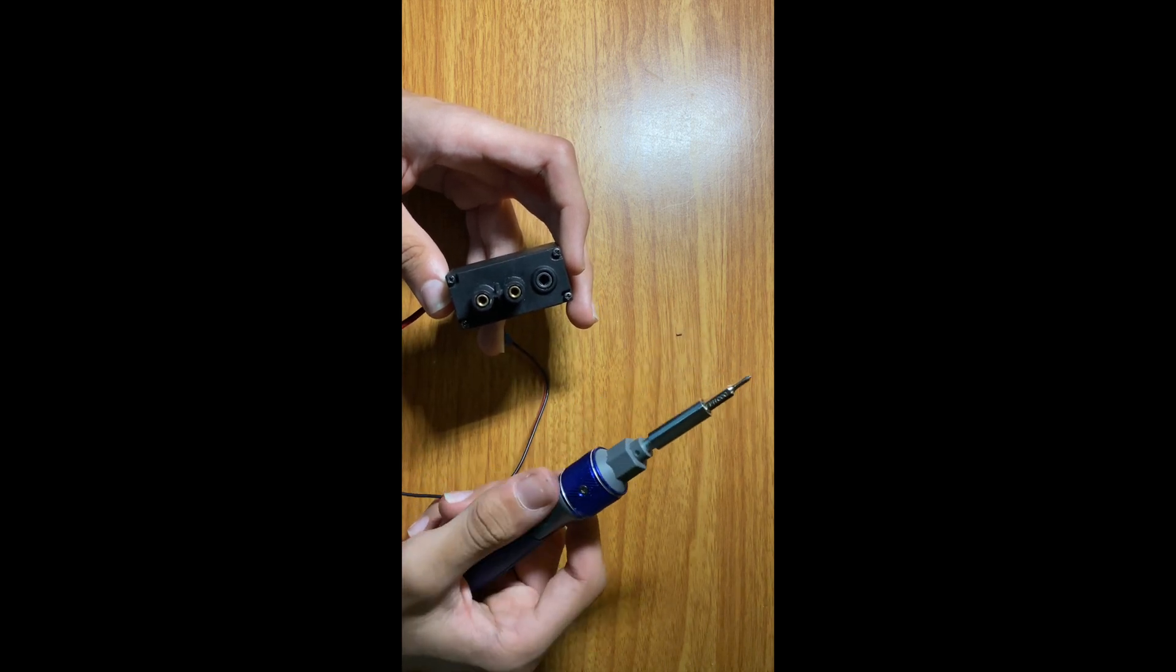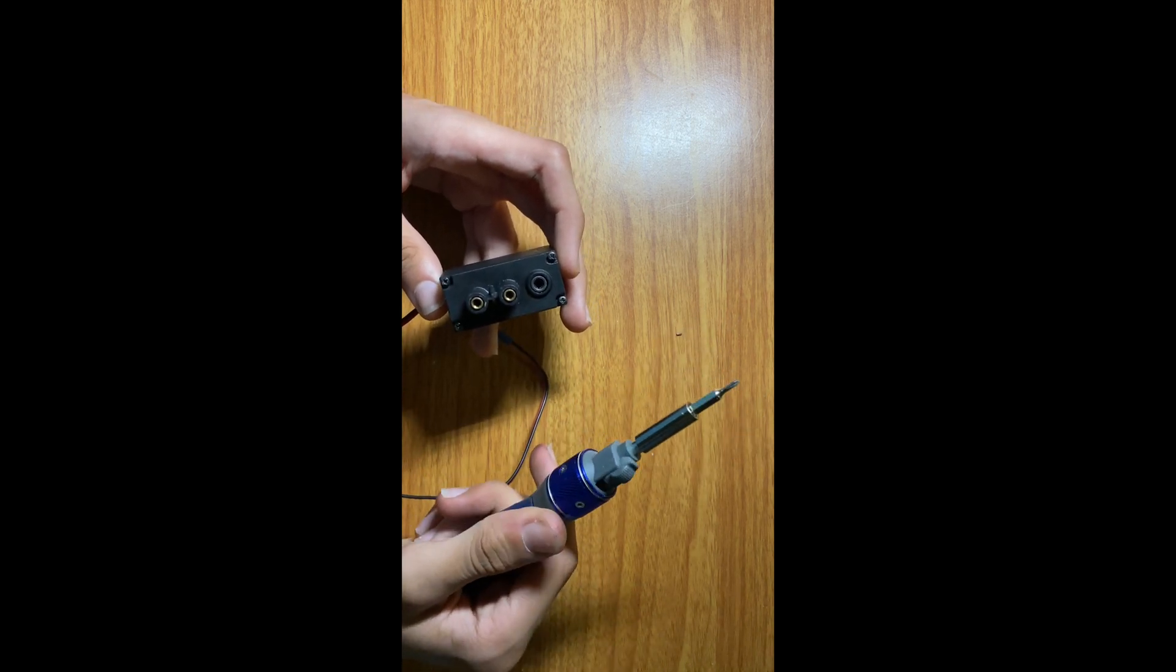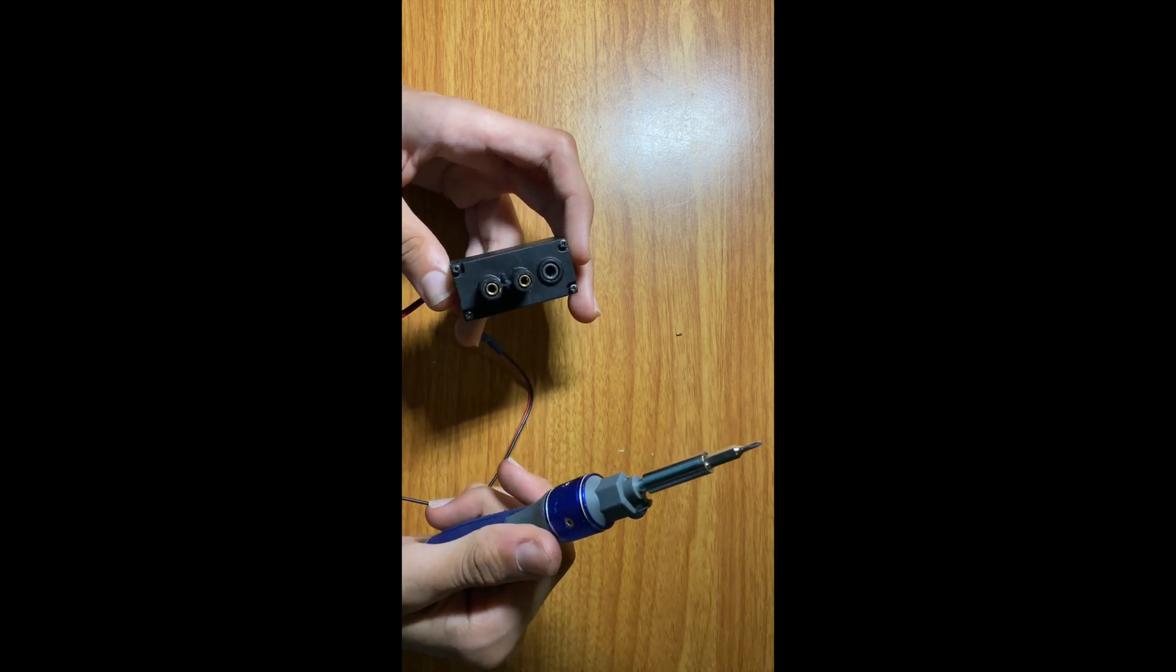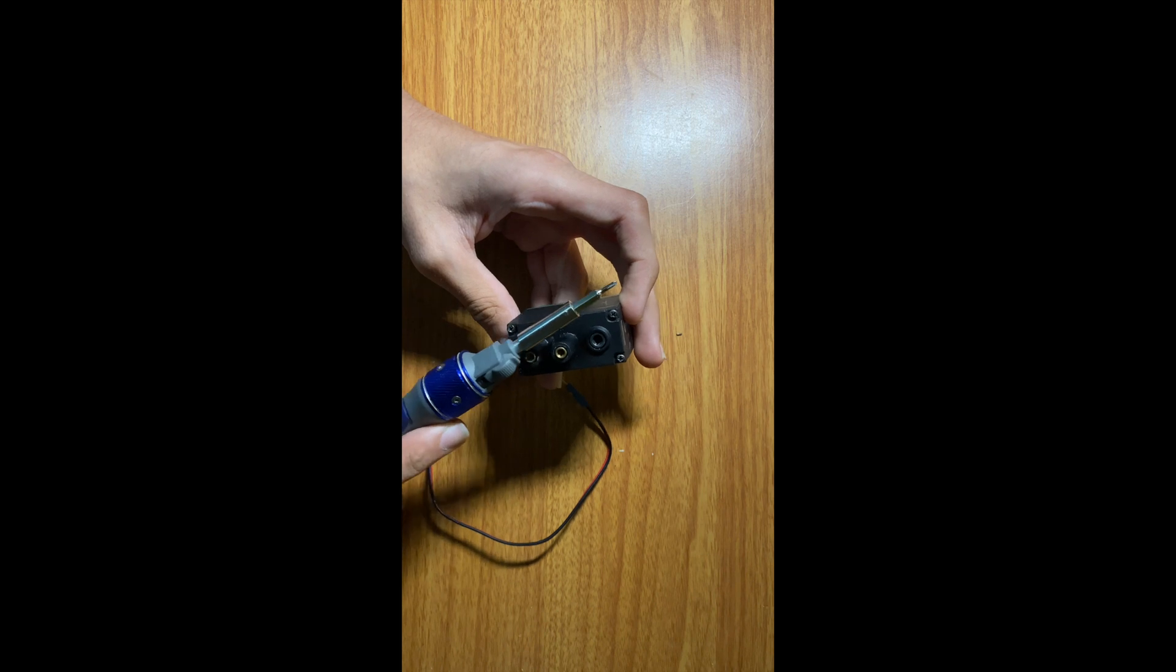Firstly, you're going to need a Phillips #000 screwdriver, which is a bit smaller than the standard Phillips screwdriver, and we're going to start off by removing these four screws.